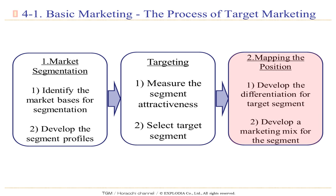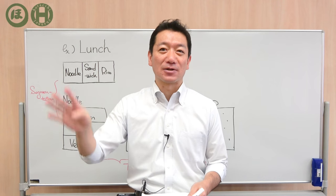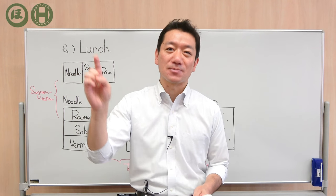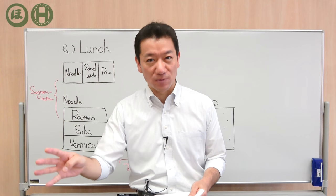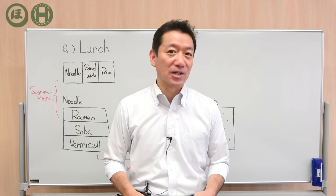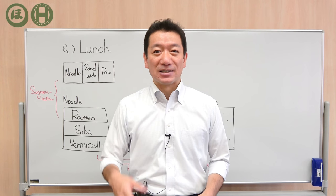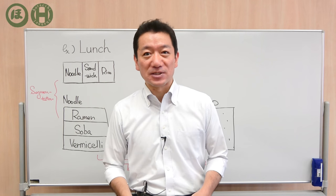In the right box — mapping the position — number one: develop the positioning for the target segment. And number two, the last one: develop a marketing mix for the segment. The marketing mix means the four Ps: product, price, place, and promotion. Selling your product with the best price at the best promotion — the best combination of these will bring you the best outcome, including the best sales, the best profit, and the best loyalty of customers.